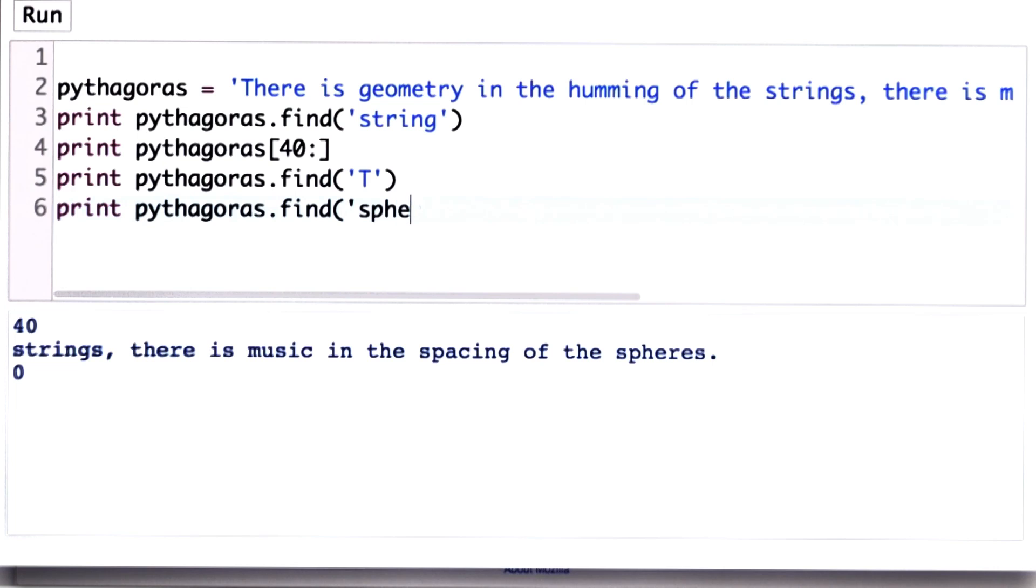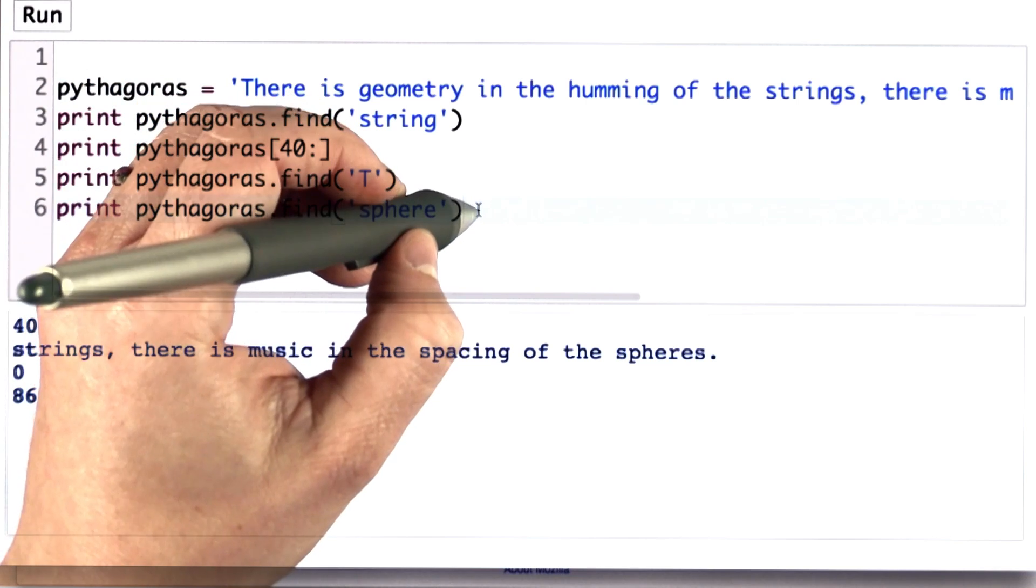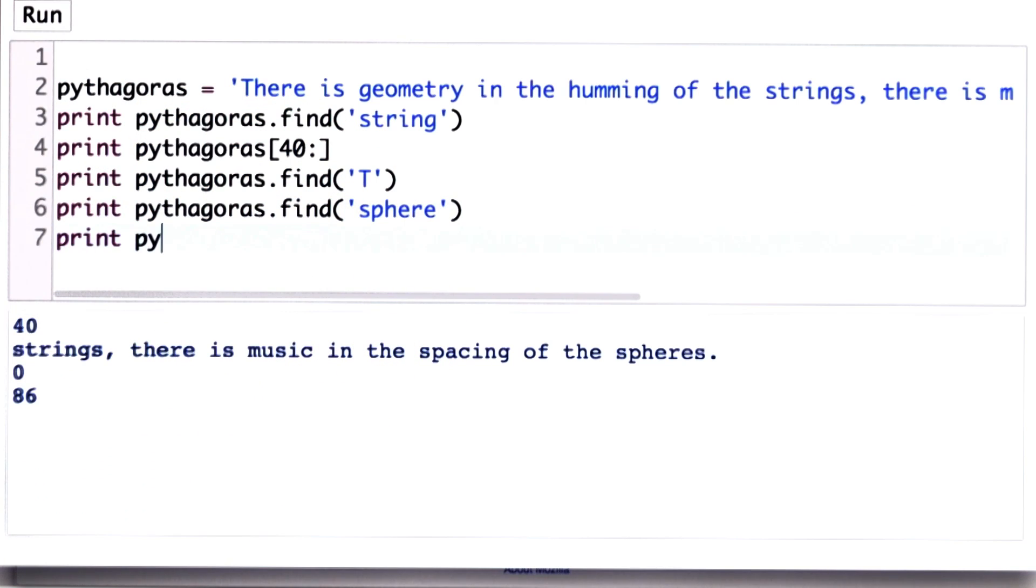And we can look for sphere. That will match sphere at the end. We get position 86. Let's print the quote from position 86. And we see the end of the quote starting from sphere.